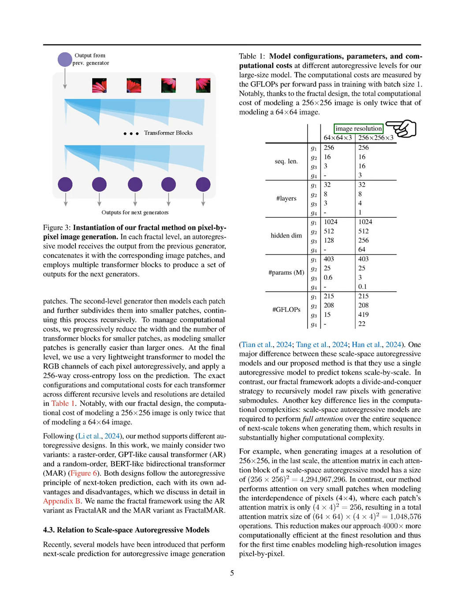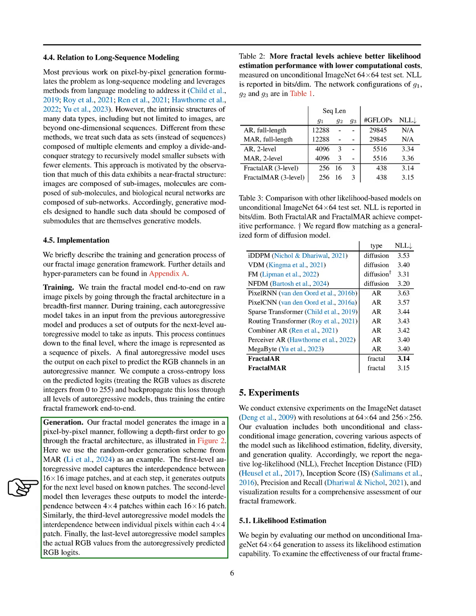We briefly outline the training and generation process of our fractal image generation framework. Our fractal model generates images one pixel at a time, using a depth-first approach through the fractal structure. We utilize a random order generation method from MAR as an example. The first-level autoregressive model captures the relationships between 16-by-16 image patches, generating outputs for the next level based on the known patches. The second-level model focuses on the relationships between 4-by-4 patches within each 16-by-16 patch. Similarly, the third-level model examines the relationships between individual pixels within each 4-by-4 patch. Finally, the last-level model samples the actual RGB values from the predicted RGB outputs.